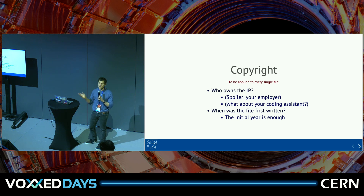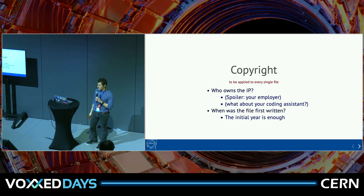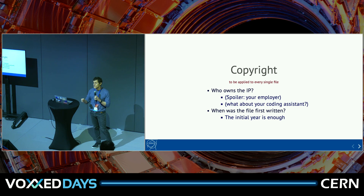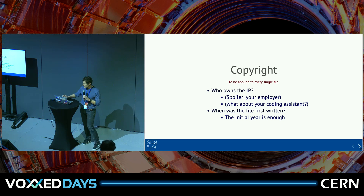In general, it's your employer who owns it. There's also the world of coding assistants, and this gets a bit fuzzy. In some Italian public administrations it's forbidden to use coding assistants because you don't know who actually owns the IP. Another interesting thing: nowadays there is general consensus that it's enough to put just the first year of the creation of the file — subsequent modifications are fine, you can leave the first year as long as it's correct.